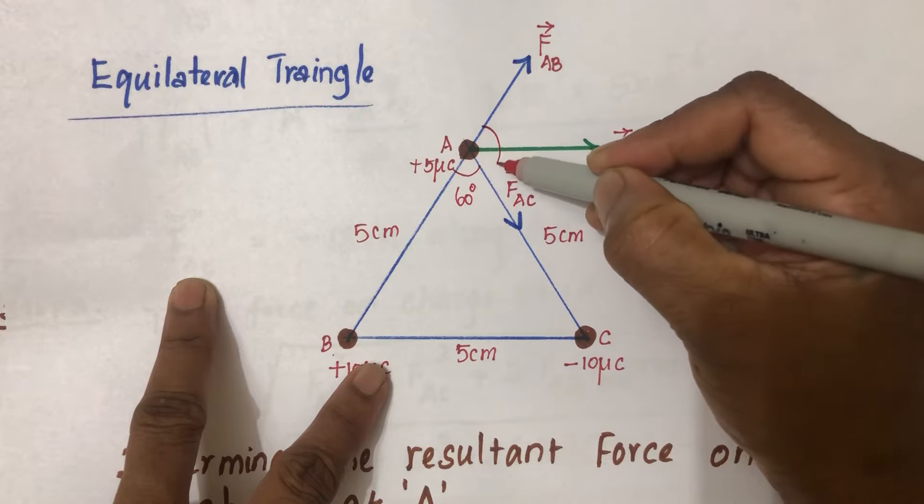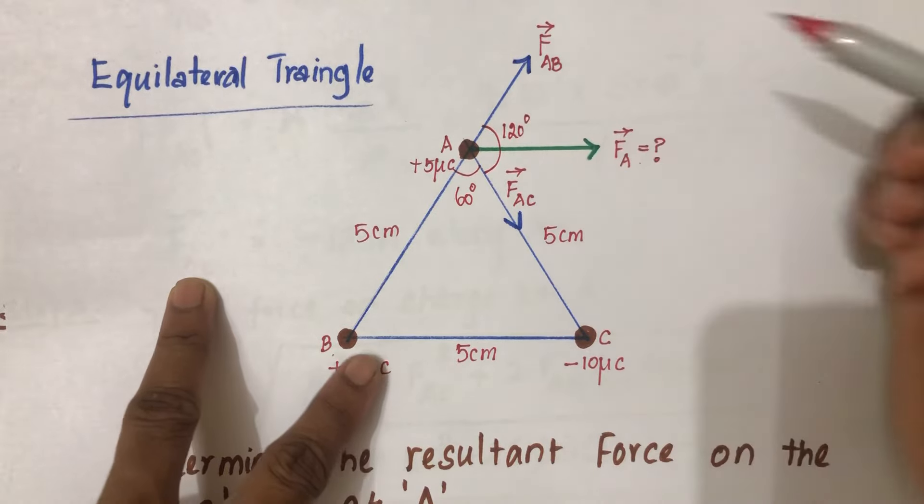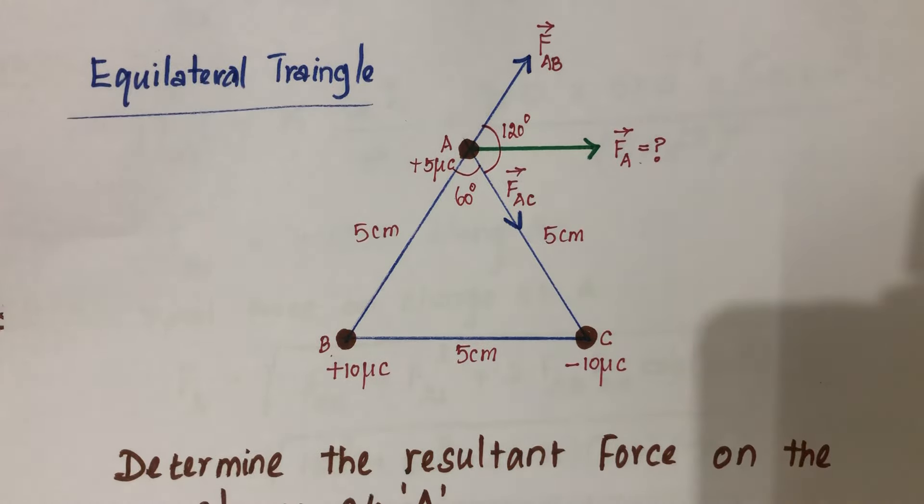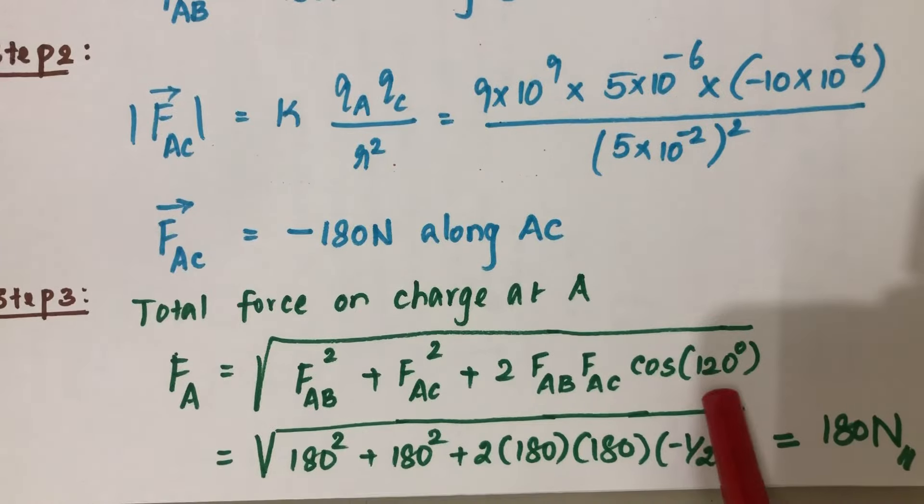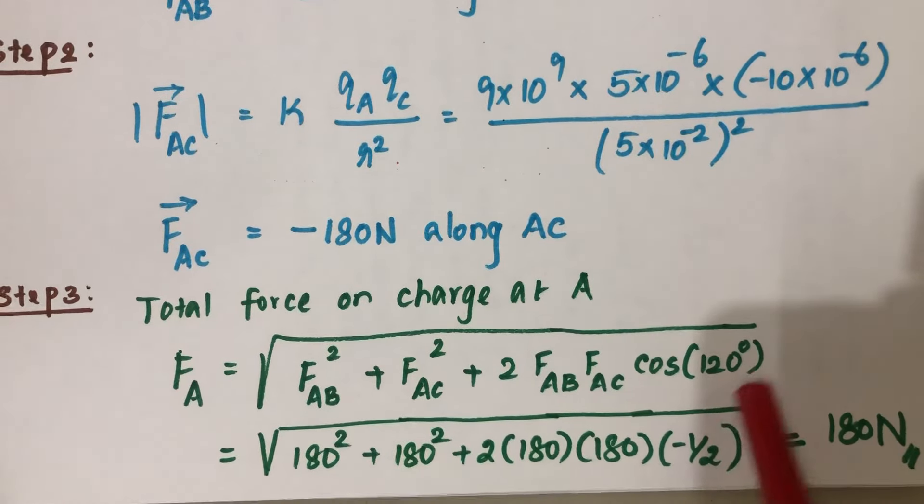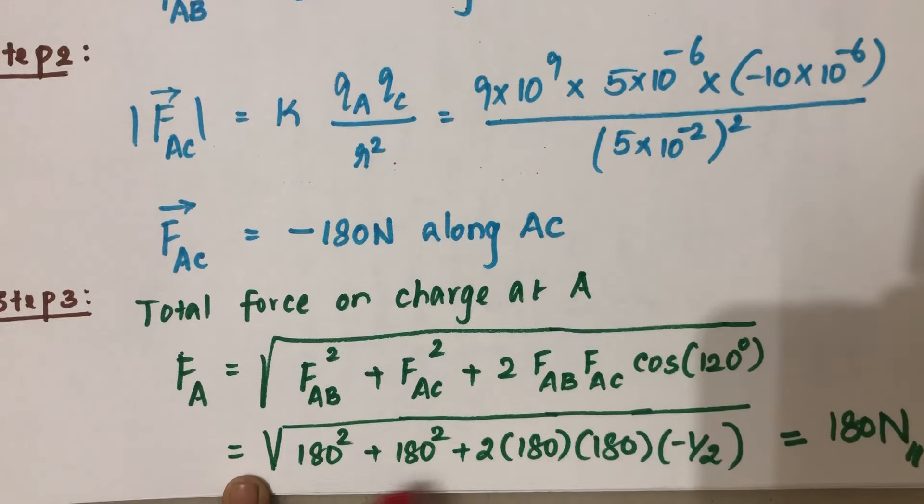We're going to substitute that here. Cos(120 degrees) is negative 1 divided by 2, negative half. If you substitute the values, you'll get 180 Newtons. That's the value of the resultant force FA that acts on the charge kept at A. Thank you.